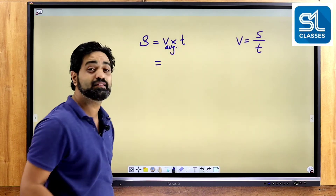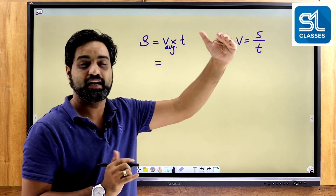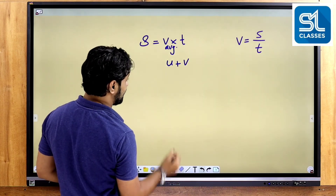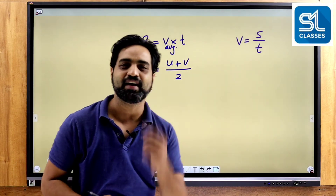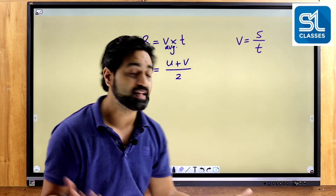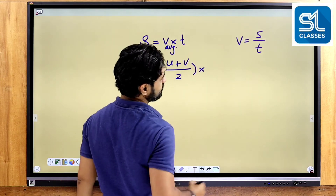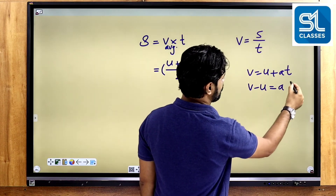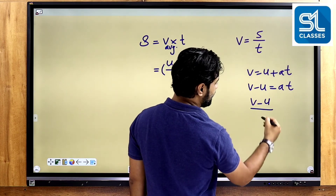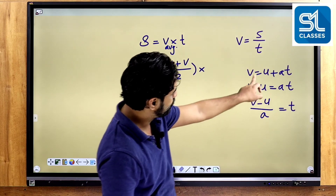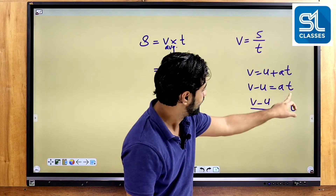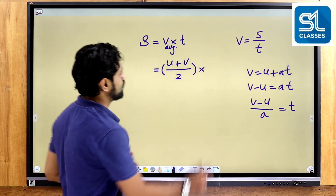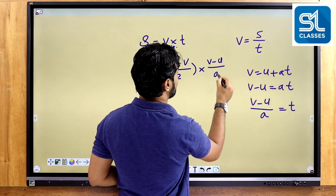V-average in accelerated motion: initially velocity is U, finally velocity is V, so average is U plus V divided by 2. Substituting S equals average velocity into T: S equals (U plus V) divided by 2 into T. From the first equation, V equals U plus AT, so T equals V minus U divided by A.